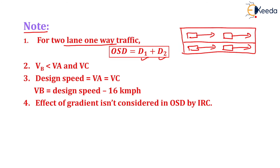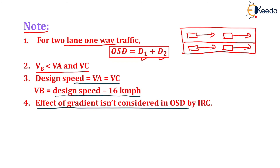VB is always less than VA and VC. If only the design speed is given, then VA and VC equal the design speed, and VB equals design speed minus 16 km/h. Also, the effect of gradient is not considered in overtaking sight distance calculations as per the Indian Road Congress. Thank you very much, students.